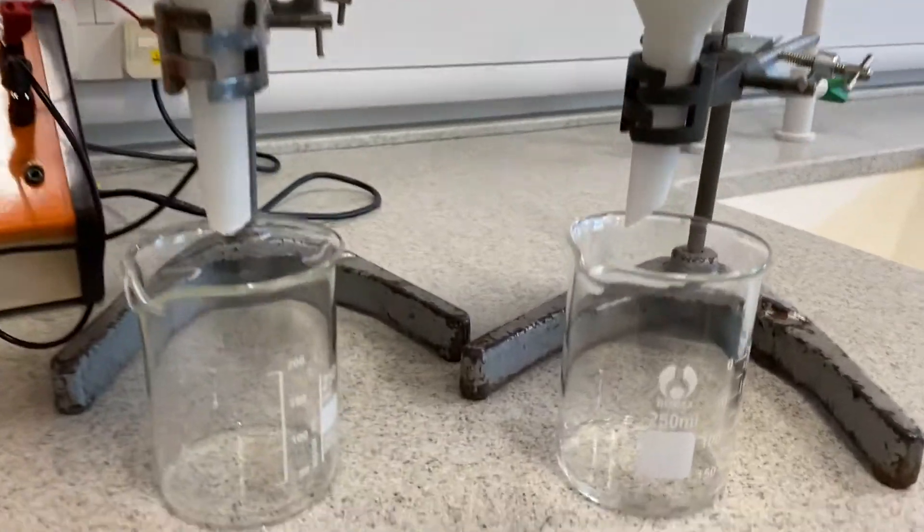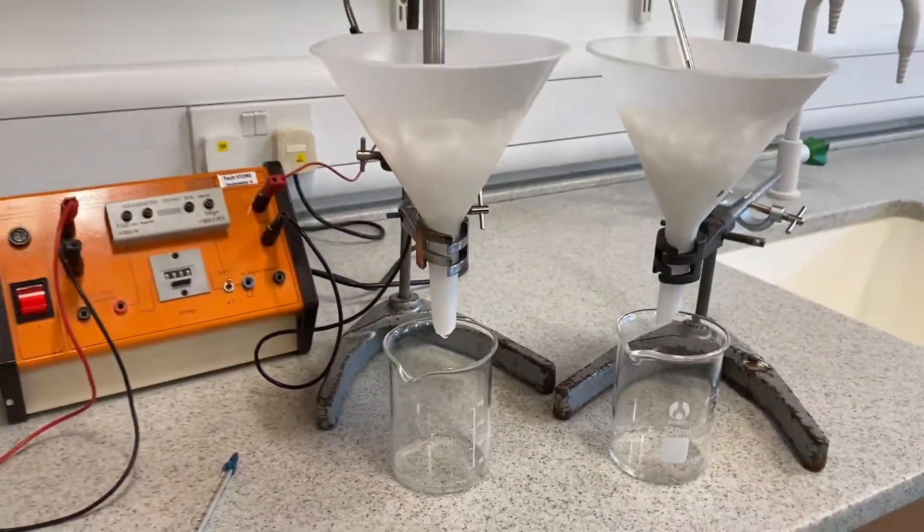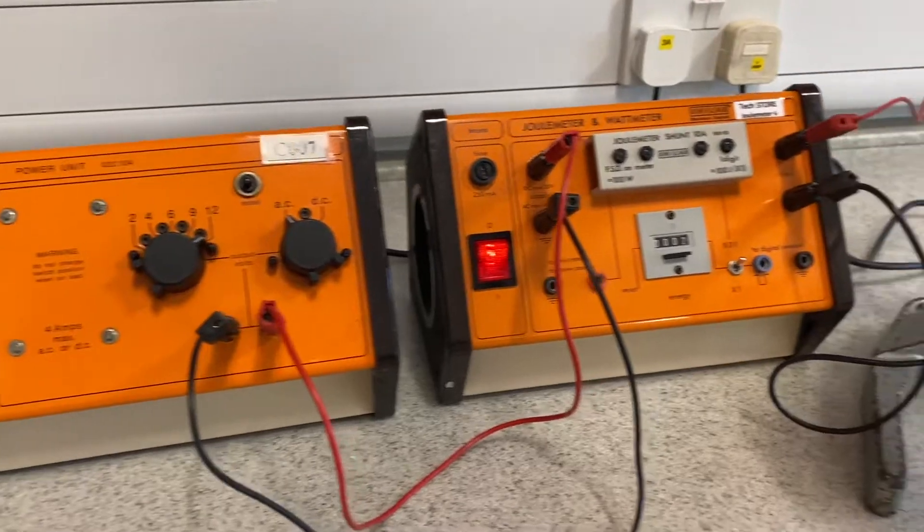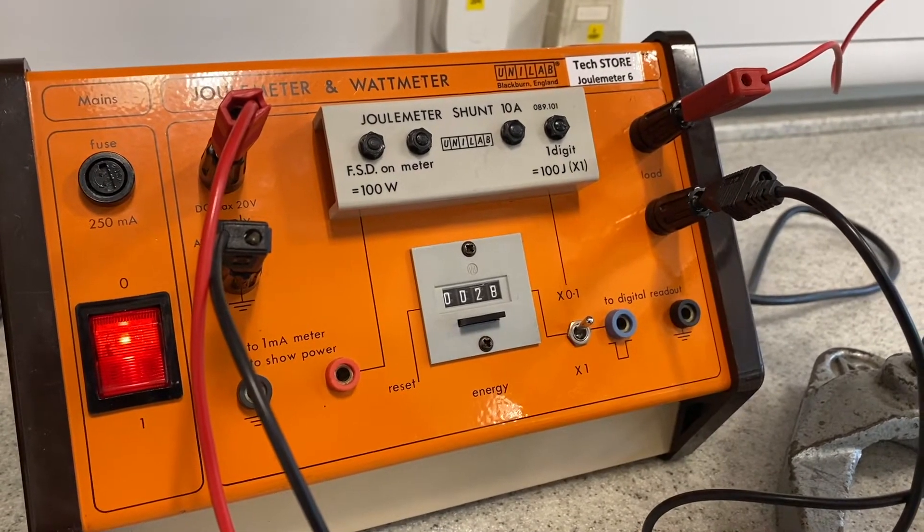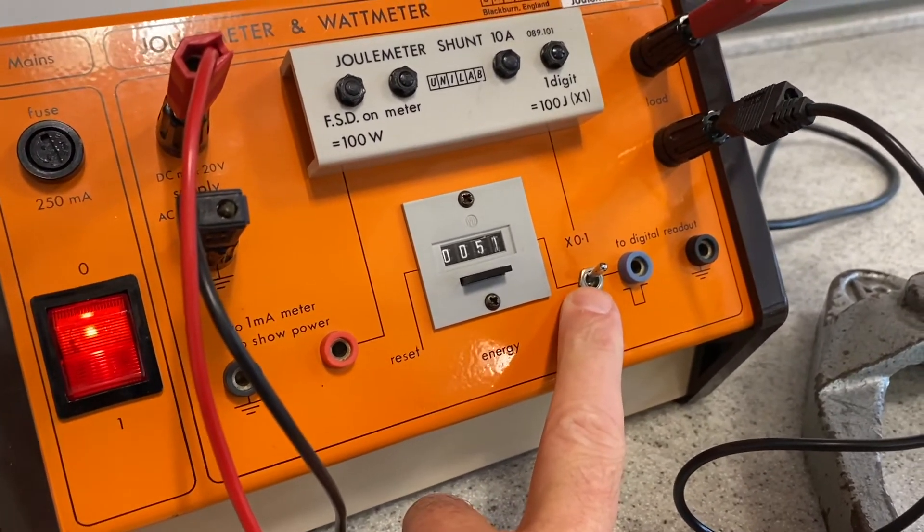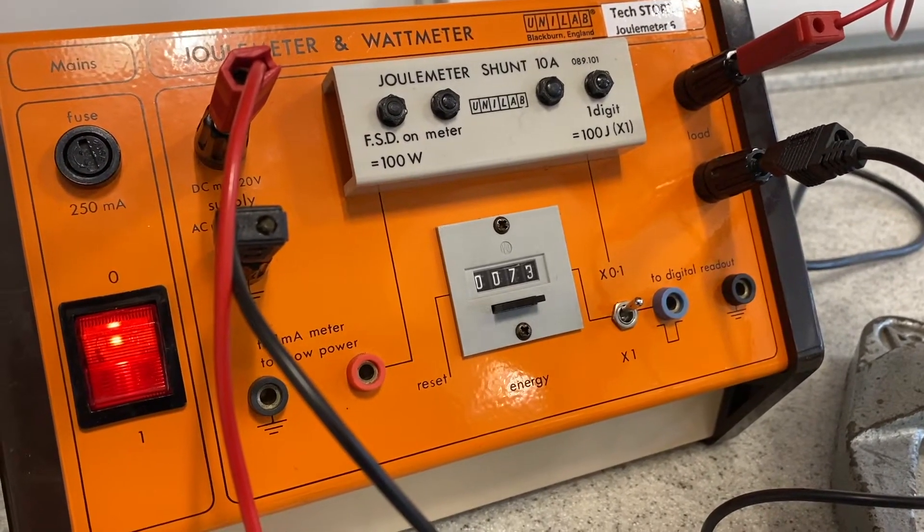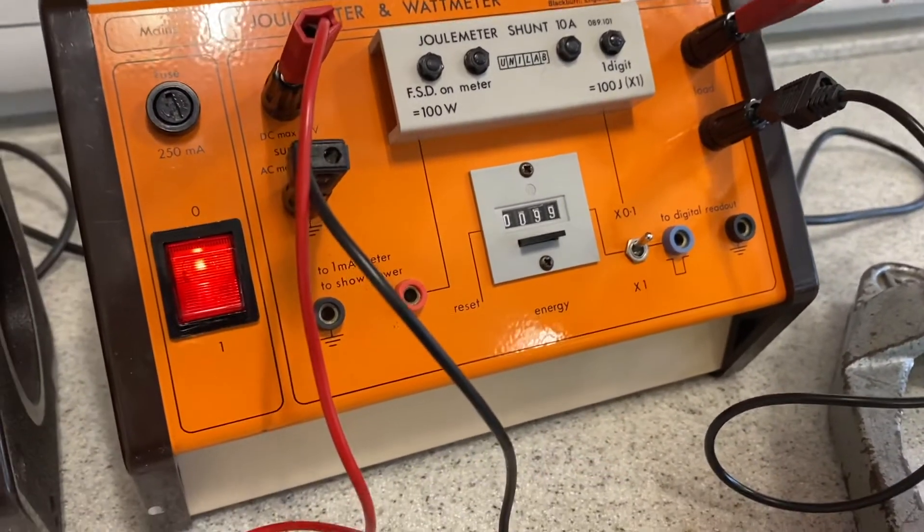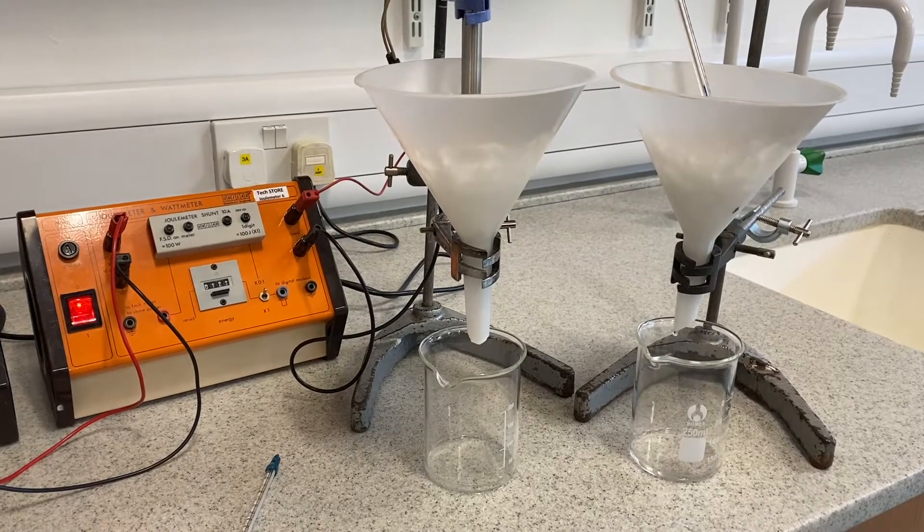Right, we're back. They're both dripping now and they're both roughly got the same amount of water in them. So we're going to turn on our heater and we're going to give it 10,000 joules. I've got it set at 0.1 setting, which means that each click is 10 joules. And if each click is 10 joules, then we want this to be reading 1,000 at the end. 1,000 times 10 will be 10,000.